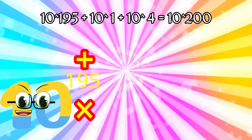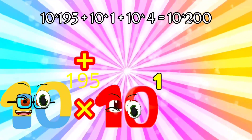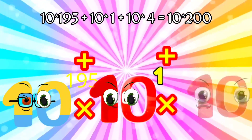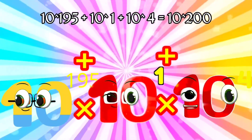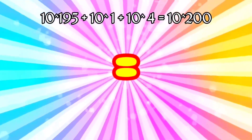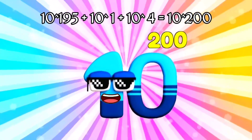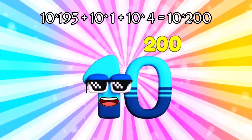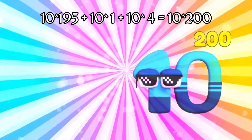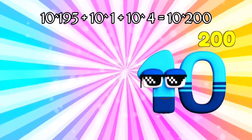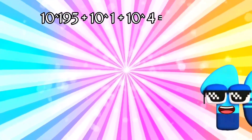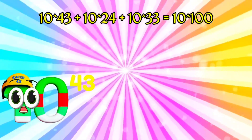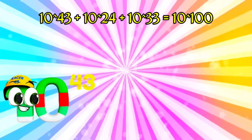I am Googol. One, two, ninety-five. I'm 10,000, and I've got four zeros. Equals. I am Googolplex, with 200 zeros. Ten Tredecillion.